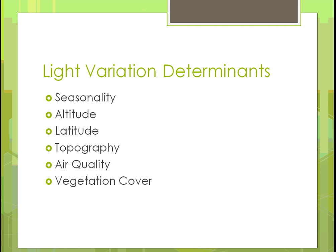Variation determinants for light include: season of the year; altitude — how high you are; latitude — your distance from the equator; topography — whether the land is flat, hilly, or sloped; air quality — if there is smog, less sun reaches the surface; and vegetative cover — a forested area receives less ground-level sunlight than an open farm field.